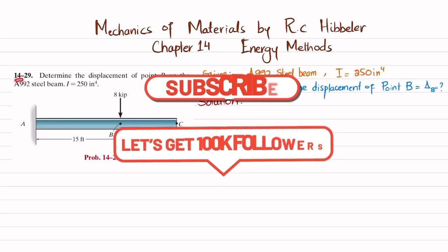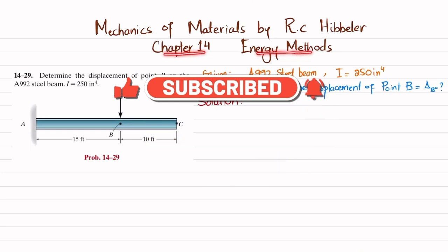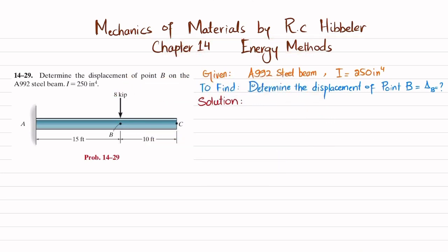Welcome back. Problem 14-29 is taken from Chapter 14, Energy Methods, in Mechanics of Materials by R.C. Hibbeler. The problem statement is: determine the displacement of point B on an A992 steel beam where I equals 250 inches to the fourth power.